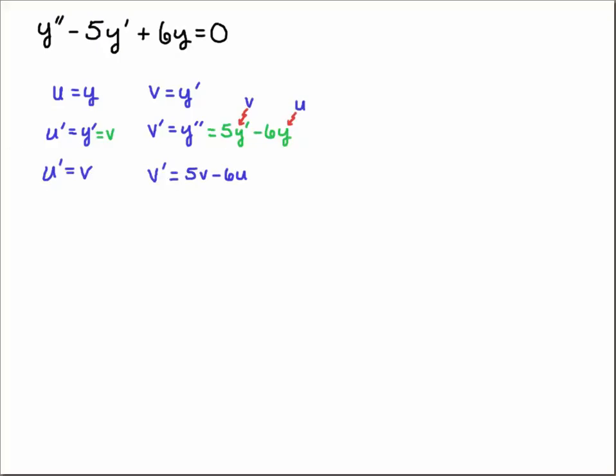Now we're almost done. Notice that v is y-prime and u is y. So we're going to have 5v minus 6u. Great. And we have that u-prime is equal to v. This is your first-order system of ODEs. u-prime is equal to v and v-prime is equal to 5v minus 6u.